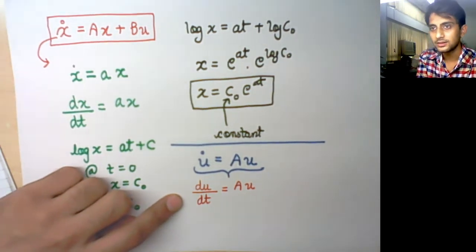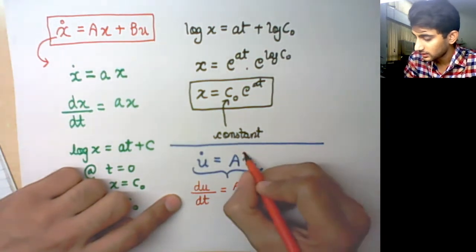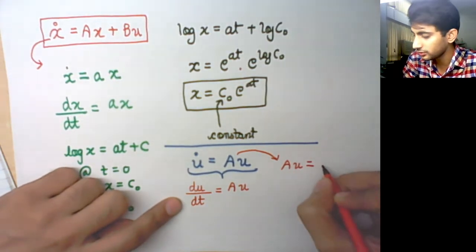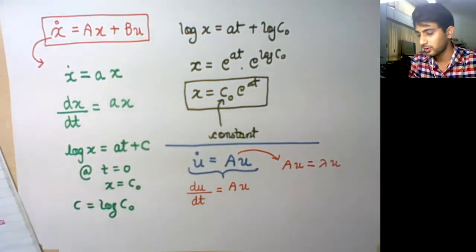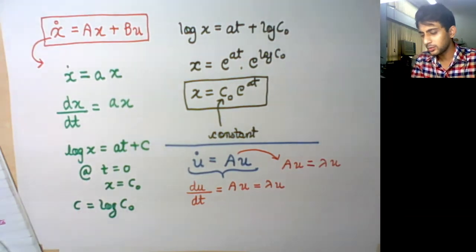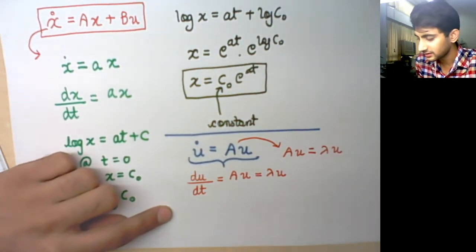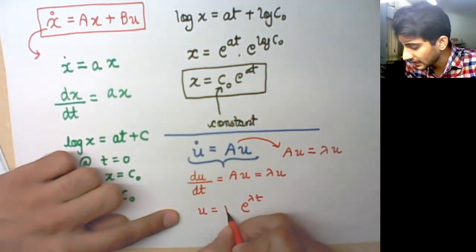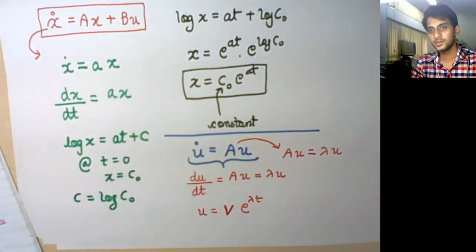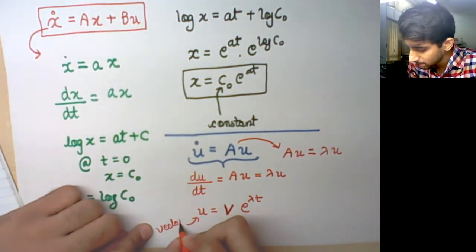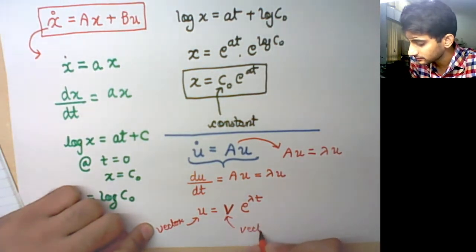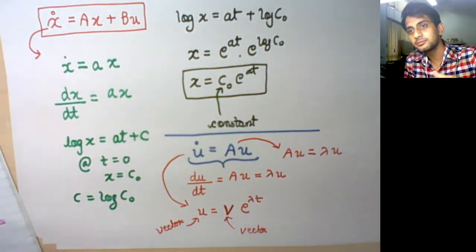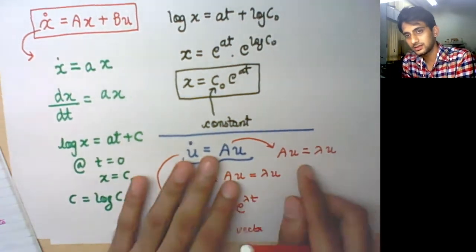If A is an eigenvalue type of problem where A times some vector u gives λu, then we can say this reduces to λu. Solving further, u equals v·e^(λt) where v is a constant vector. This is the solution provided A can be decomposed as an eigenvalue matrix and A has distinct eigenvalues.